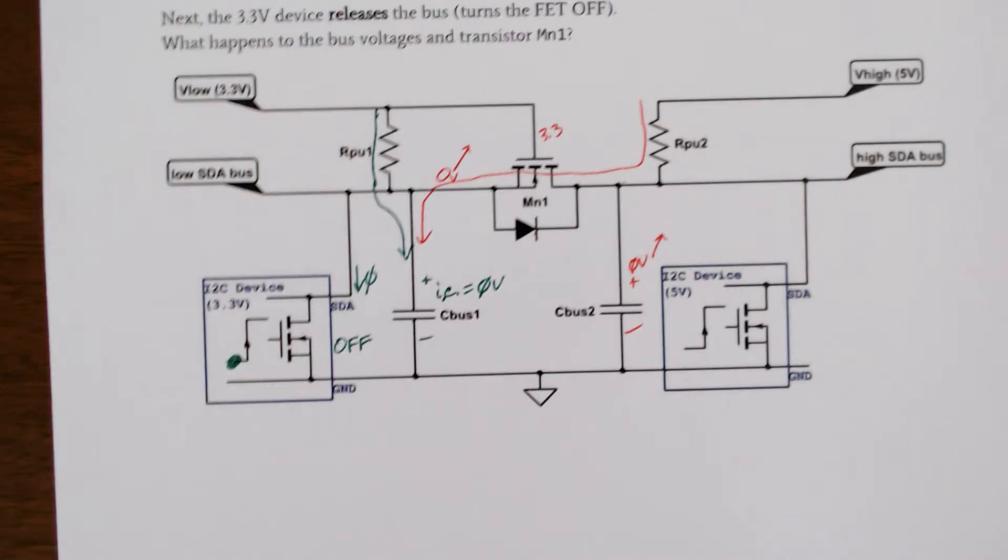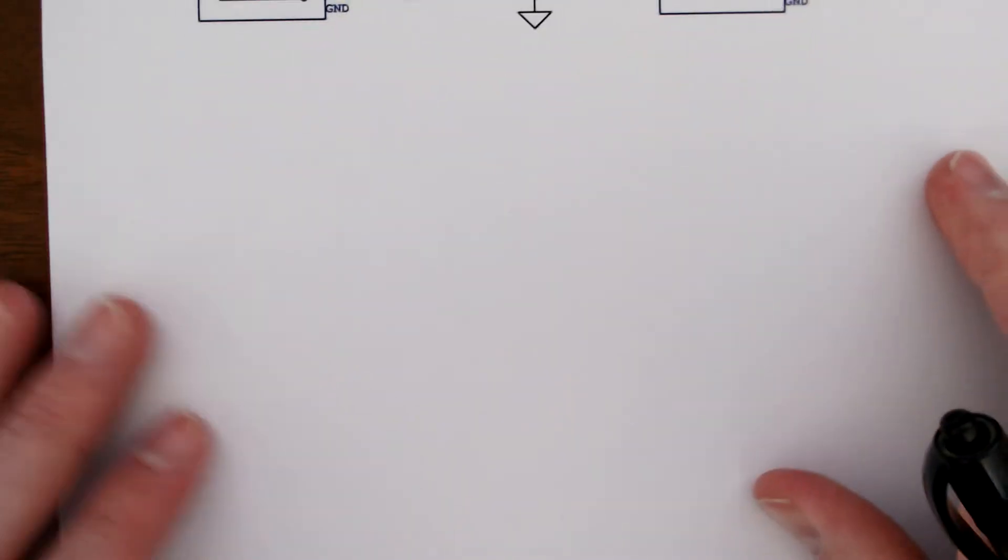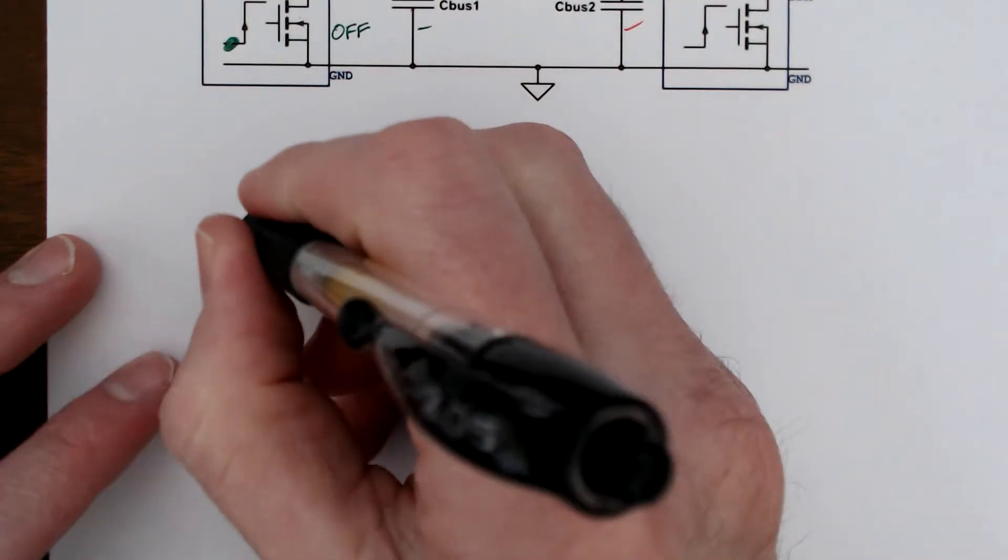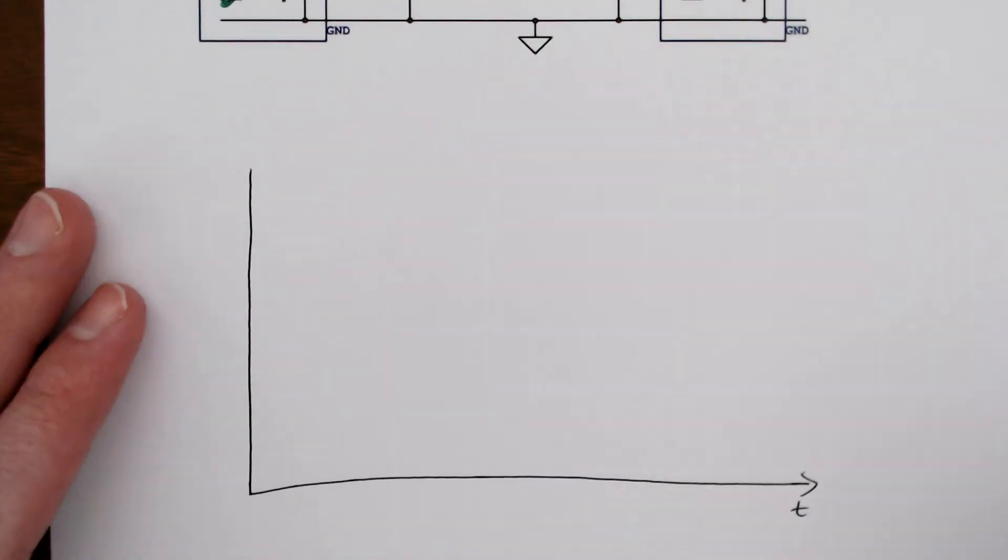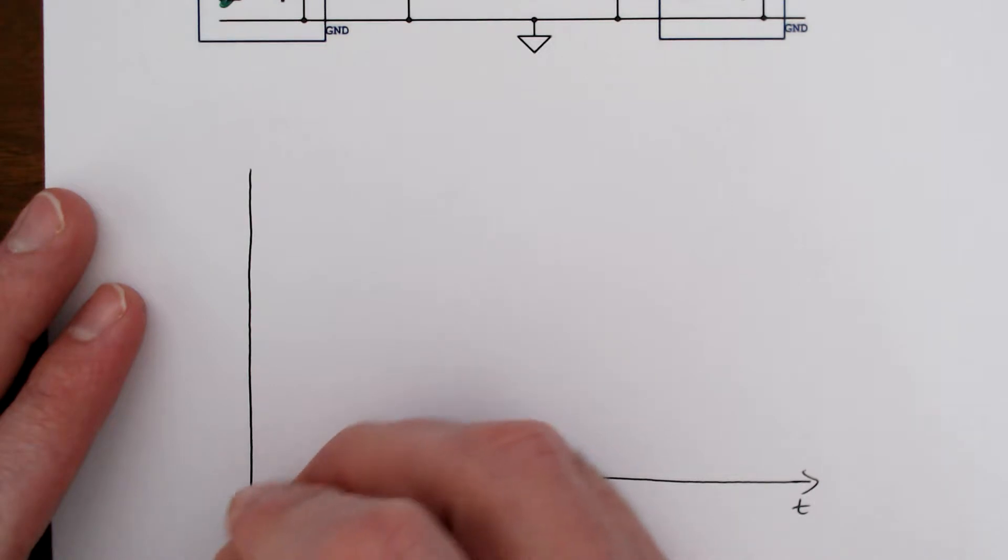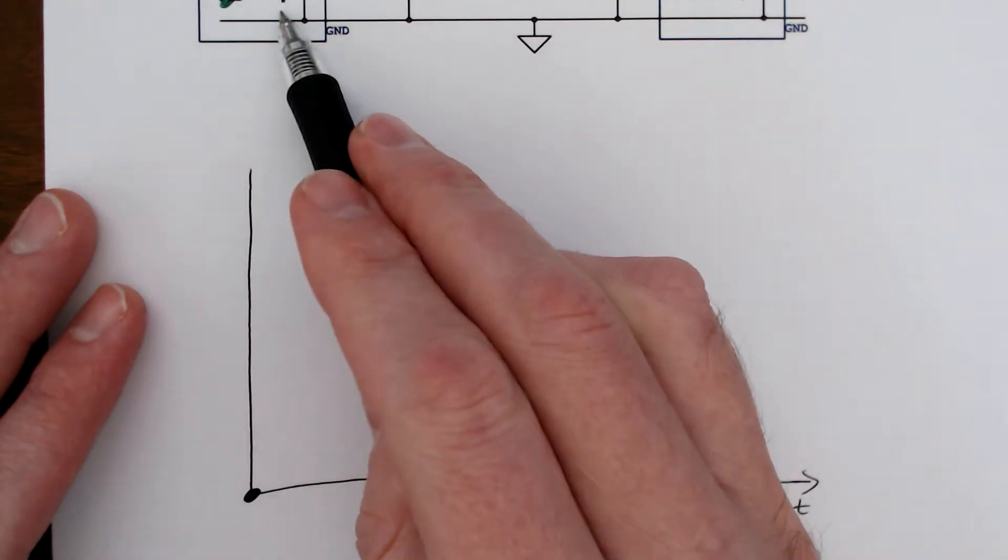What does this look like in time? Well, let's draw a little picture here. There's a time axis. Here's zero. This is the moment that our MOSFET switches off.